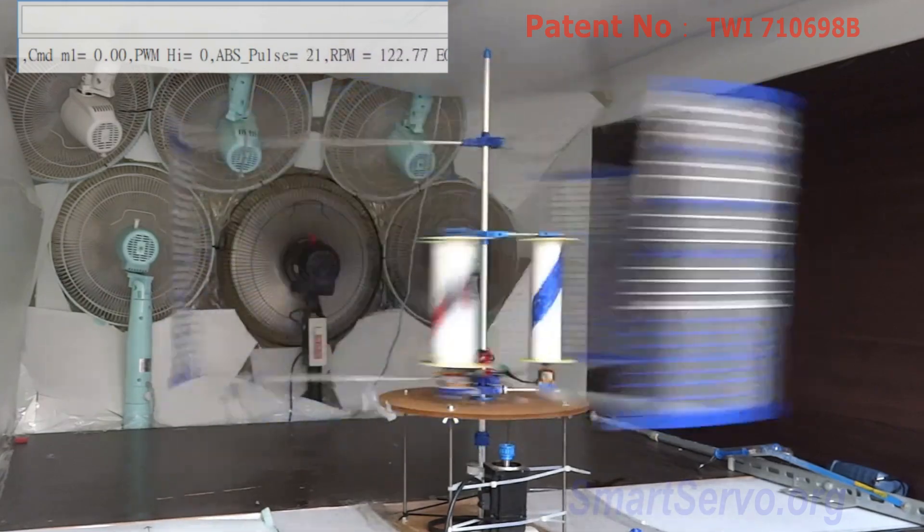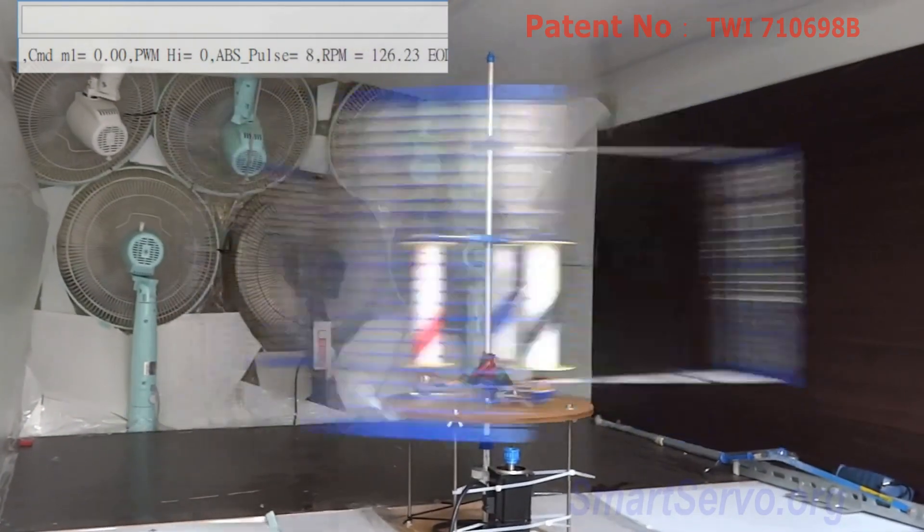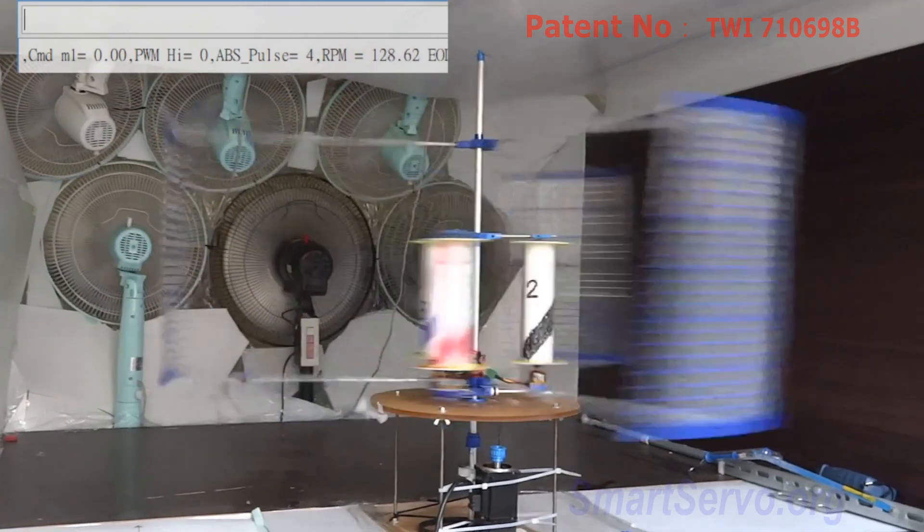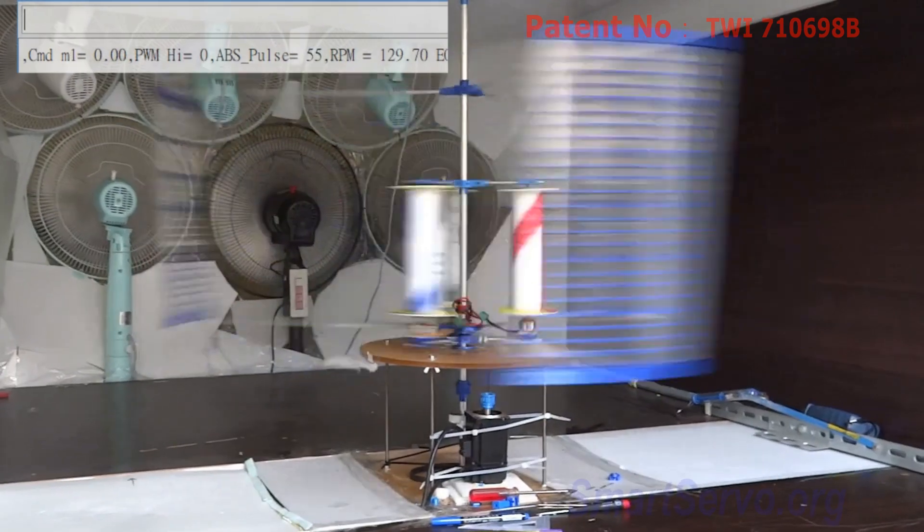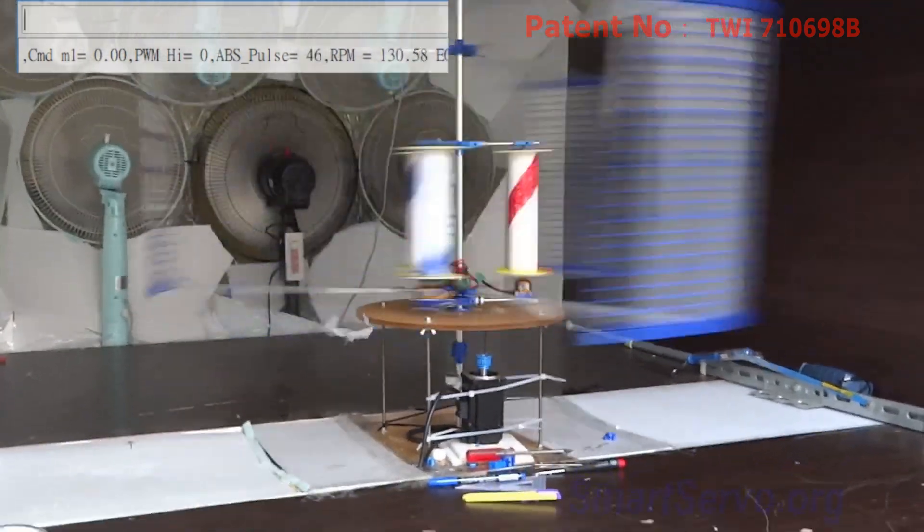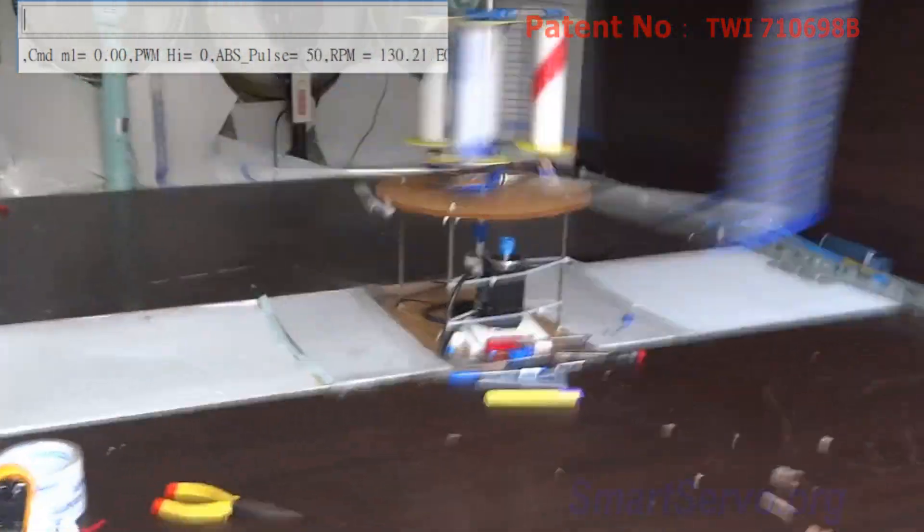From this experiment, we can see that by making good use of the Magnus effect, small motors can drive a large wind turbine. When the wind turbine rotates fast enough, the rotor motor can stop and no more energy is consumed.